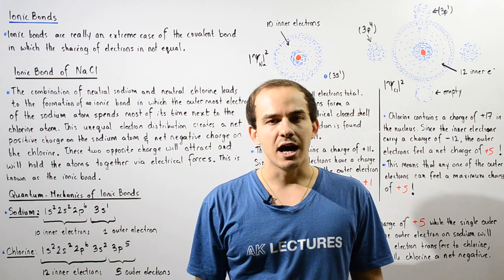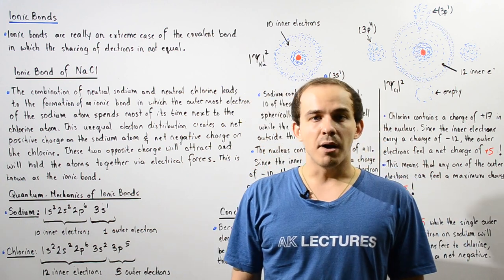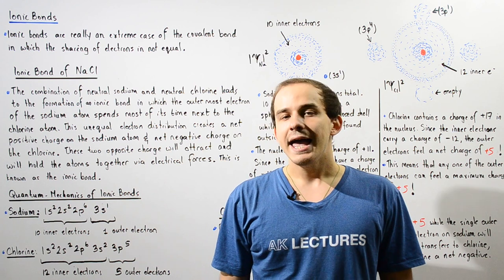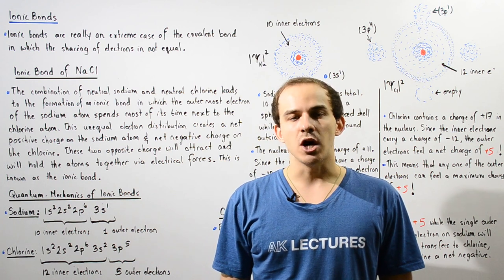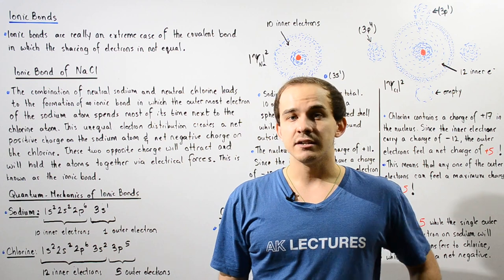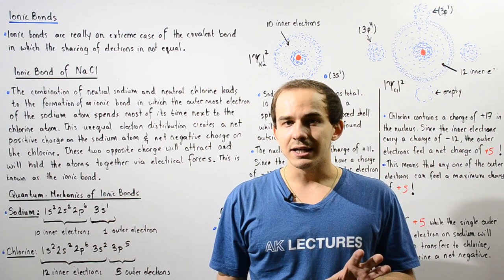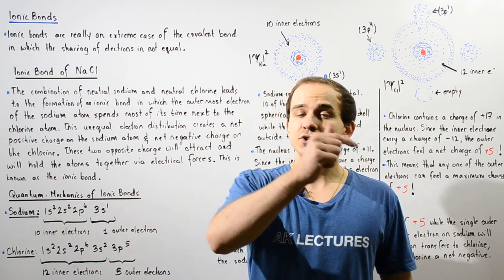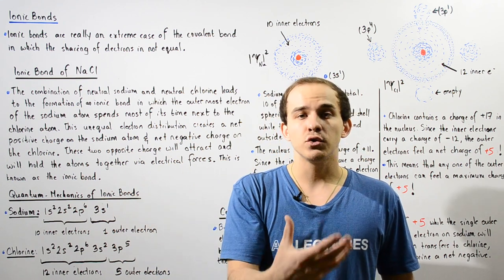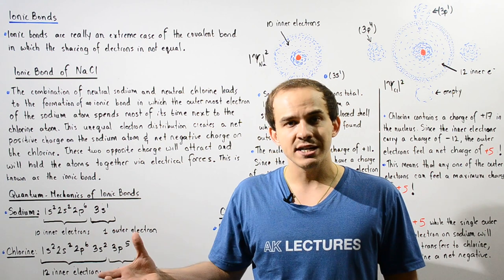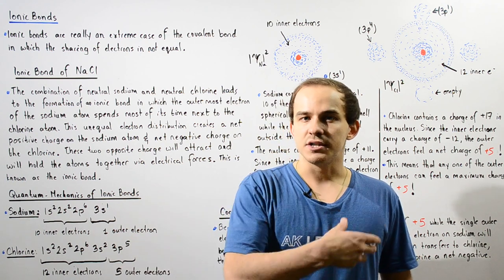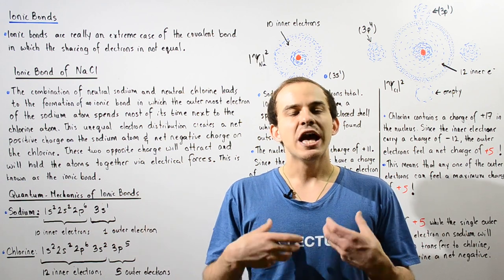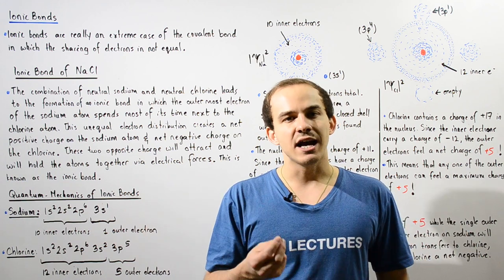What exactly is an ionic bond? An ionic bond is basically an extreme case of a covalent bond in which there is an unequal distribution of electrons. Inside an ionic bond, the electron on the outermost shell of one atom is transferred to a second atom, and that creates a positive charge on one atom, a negative charge on the second atom, and the opposite charges attract via electrical forces. This is known as an ionic bond.